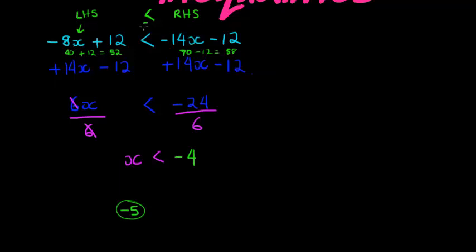Well if we put negative 4 in here we'll get that the left hand side is equal to the right hand side, so negative 4 is not included because we don't want the left hand side is smaller than the right hand side or equal to. This would be the solution if it was equal to but it's not equal to, it is smaller than.